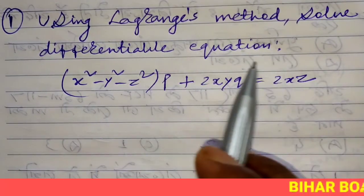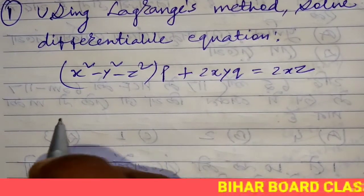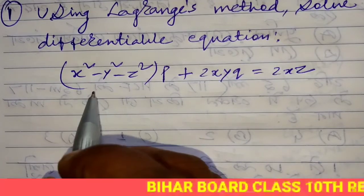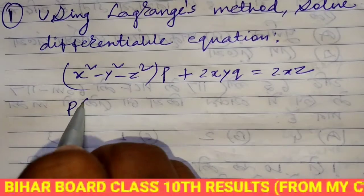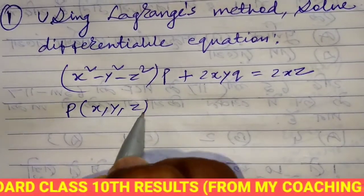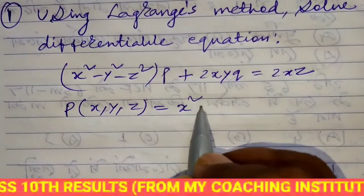Using Lagrange's method, solve the quasi-linear differential equation. At this level, P(x, y, z) is equal to x² - y² - z².